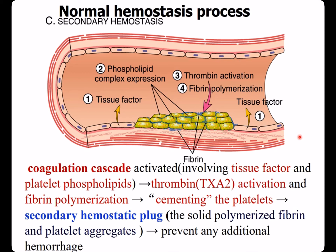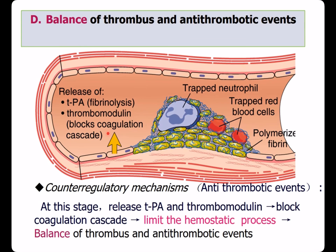This shows formation of secondary hemostasis. Tissue factor is released. Platelets phospholipids are activated. This leads to thrombin activation and fibrin polymerization. A solid hemostatic plaque forms to prevent any additional hemorrhage. At this stage, TPA and thrombomodulin are released to block the coagulation cascade and limit the hemostatic process, maintaining the balance of thrombotic and antithrombotic activity.